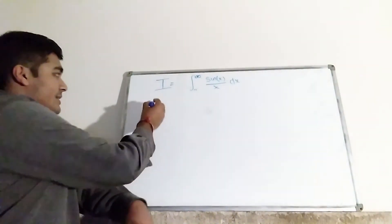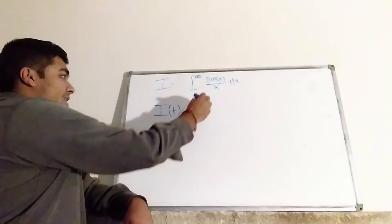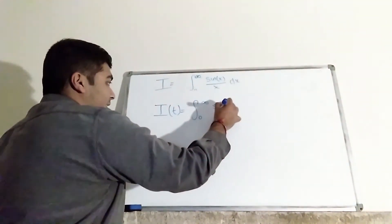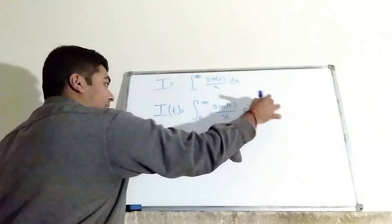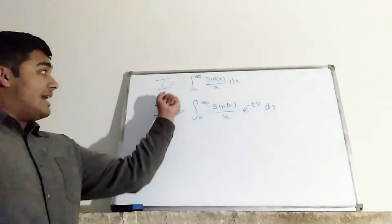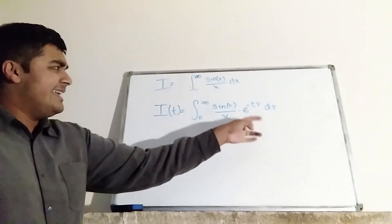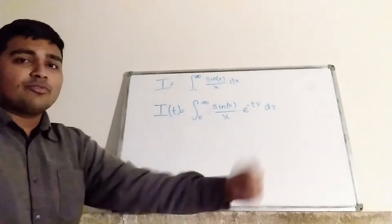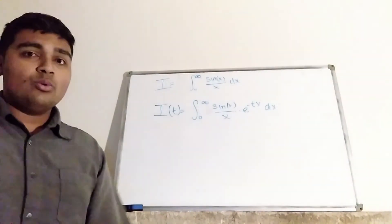What I'm actually going to do is look at a more general function, I(t), defined as the integral from 0 to infinity of sin(x) over x times e to the minus tx dx. What I have here is I(0), because if I put t equals 0 into this, the exponential becomes 1, and I'm left with the integral from 0 to infinity of sin(x) over x dx.